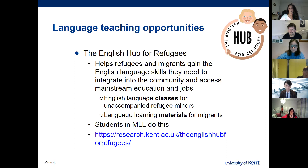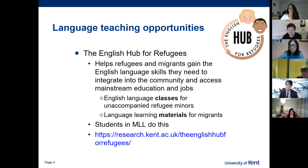We also offer students opportunities to actually teach English. One is the English Hub for Refugees — a project that helps refugees and migrants gain the English skills they need to integrate into the community and access education and jobs. We offer weekly English classes at the University of Kent for unaccompanied refugee minors, and our students are the ones who do this teaching, with the support and training they need. There's a website if you're interested in seeing the materials.